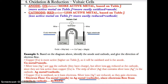Electrons will flow from the anode, Cu, to the cathode, Ag — since electrons always flow from the anode to the cathode, no matter what. Since copper is the anode, that's where electrons start, and since silver is the cathode, that's where electrons wind up.